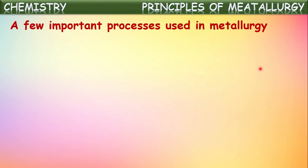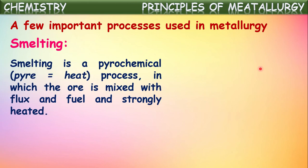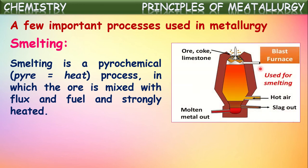Now let us see some important processes used in metallurgical techniques. Metallurgy means the process in which metals are extracted from their ores. Let us see some terminology and procedures used in metallurgy. One of those is smelting. Smelting is a pyrochemical process — a process in which a large amount of heat is used. In this process the ore is mixed with flux and fuel and strongly heated at very high temperatures.